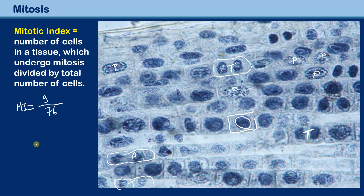The mitotic index must of course be a value less than one. Do not divide 76 by 9, because then you get a value larger than one. You have to divide the number of cells that undergo mitosis — which is less than the total number of cells — by the total number of cells.